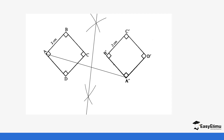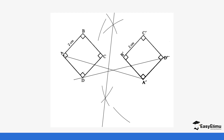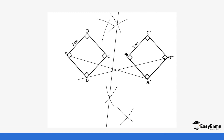Do the same with another pair of points. You can pick B–B prime, C–C prime, or D–D prime — you need at least two pairs to find the center of rotation. In this case, D and D prime are used. Join D to D prime using a ruler, then place the compass at D and make arcs at the top and bottom, then repeat at D prime so the arcs cross. Join those crossing arcs with a ruler to bisect the line D–D prime.